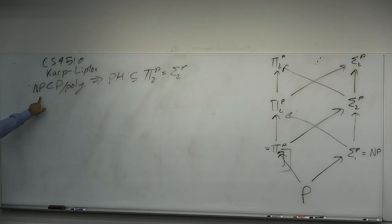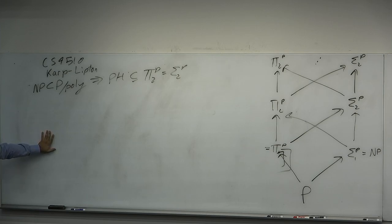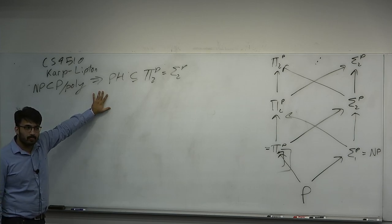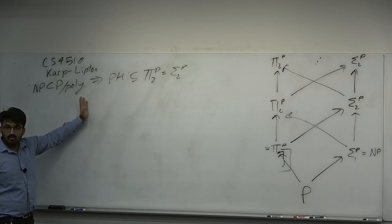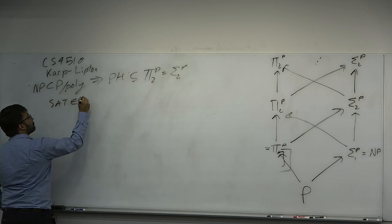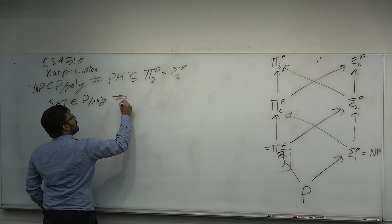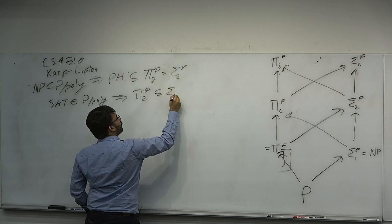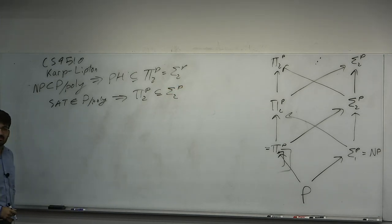If NP has polynomial size circuits, the polynomial hierarchy collapses. This is basically saying: if SAT might be tractable via circuits, we probably don't think there's a polynomial size circuit family for SAT — because we don't think the polynomial hierarchy should collapse. We'll use a more specific statement: if SAT has a polynomial size circuit family, then we can put Pi-2 inside Sigma-2. Pi-2 ⊆ Sigma-2 is sufficient to show Pi-2 = Sigma-2 by closure.